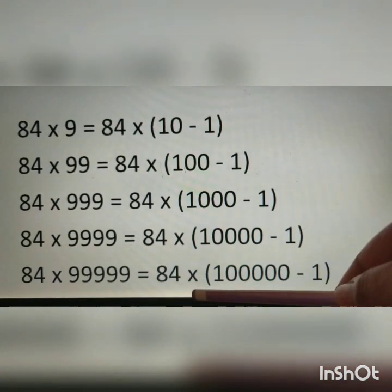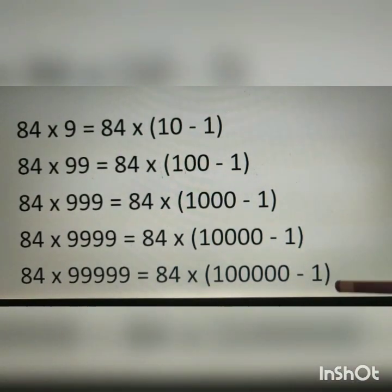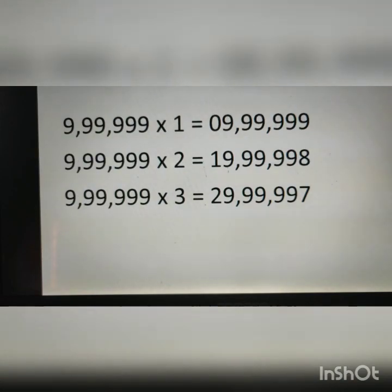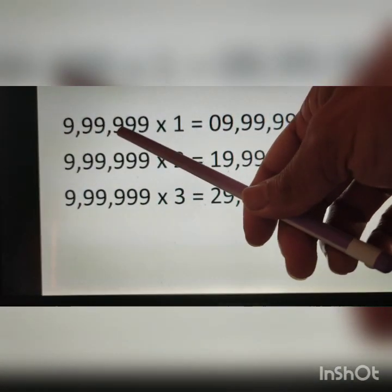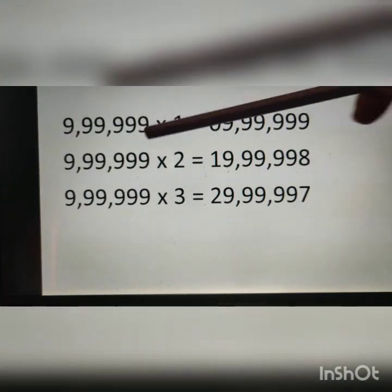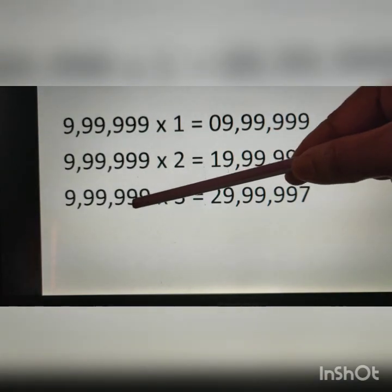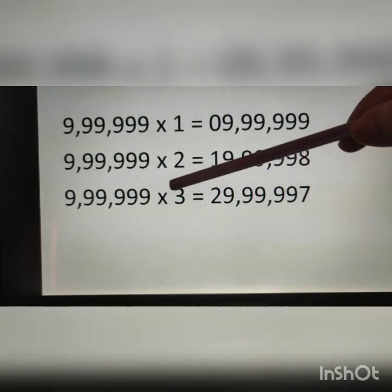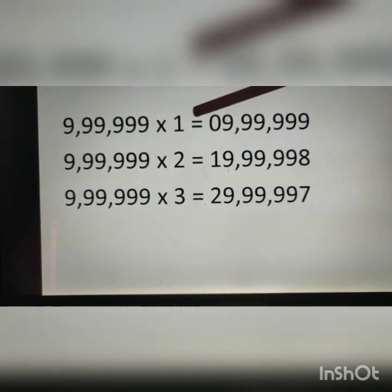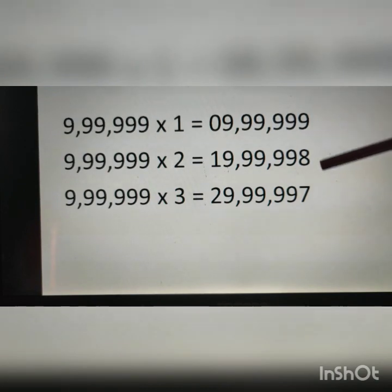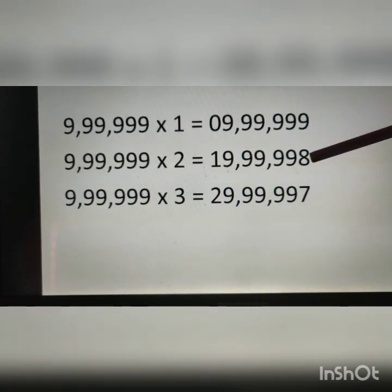Now let us observe some patterns of numbers. Here 99999 multiplied by 1 is equal to 99999. The numbers on the right side are the same (99999), while the multiplier increases by 1 each line: 1, 2, 3. So the next number will be 4. The result is 1 less than the multiplier on the left side — so here 0, 1, 2; the next will be 3. The last digit decreases by 1 each line: 9, 8; so 1 less than 8 is 7.